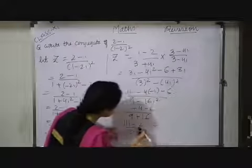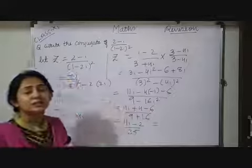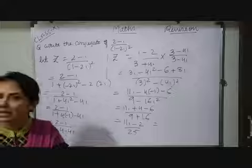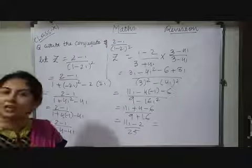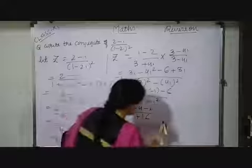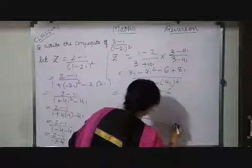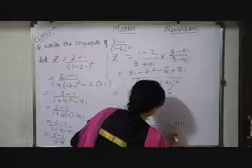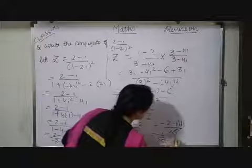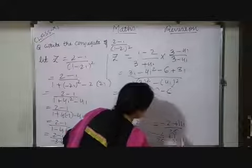So, here what I should do? Because complex number we are generally denoting into the form of a plus ib. Imaginary part we are writing second. Real part we are writing first. So, to convert into that form what I will do? Minus 2 plus 11i upon 25 which is equals to minus 2 upon 25 plus 11 upon 25i.